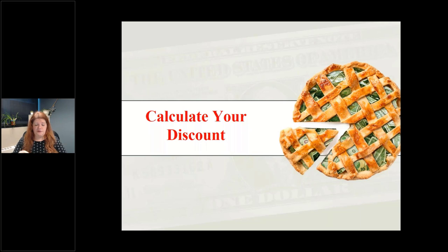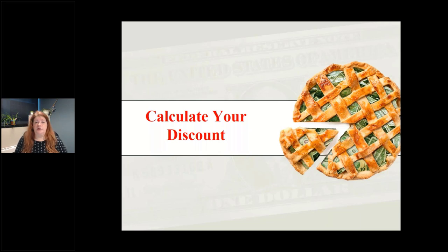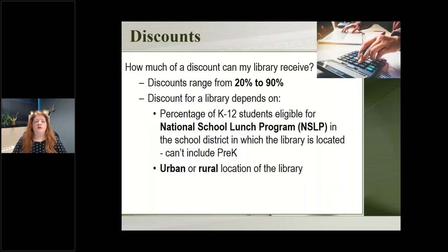It can help you talk to your board, municipality, or community staff who might wonder why you're spending time on this program. You can tell them right away why this could be a good thing for your library. You can receive anywhere from 20 to 90 percent off on your eligible services — your monthly internet and any equipment needed to run that internet. The discount percentage is based on the national school lunch program.